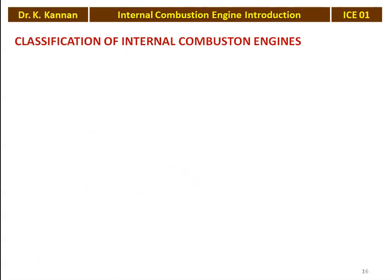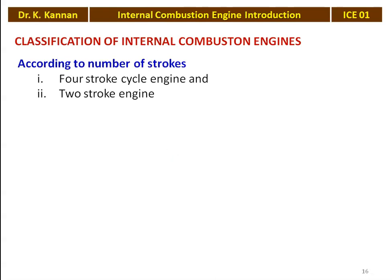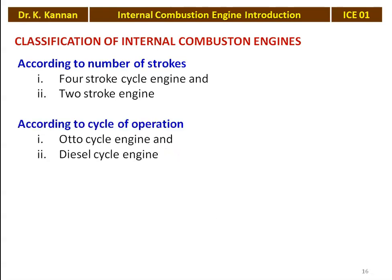Classification of internal combustion engines: based on the number of strokes, this may be a four-stroke cycle engine or a two-stroke cycle engine. Four-stroke cycle engines are generally high power engines and two-stroke cycle engines are generally low power engines. According to the cycle of operation, it may be an Otto cycle engine (the basic theoretical cycle for petrol engines) or a diesel cycle engine. We studied the Otto cycle and diesel cycle earlier in gas power cycles.